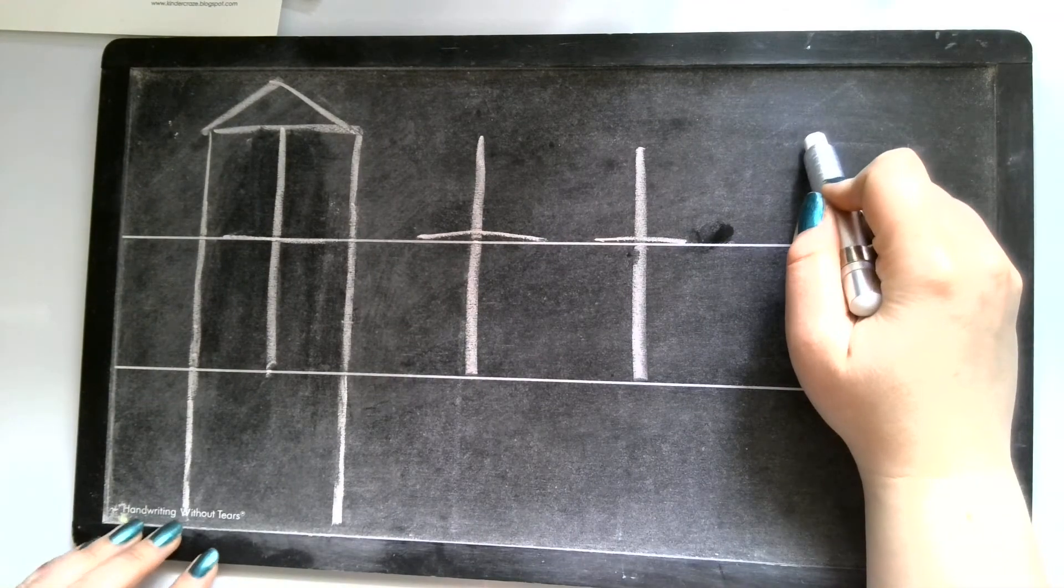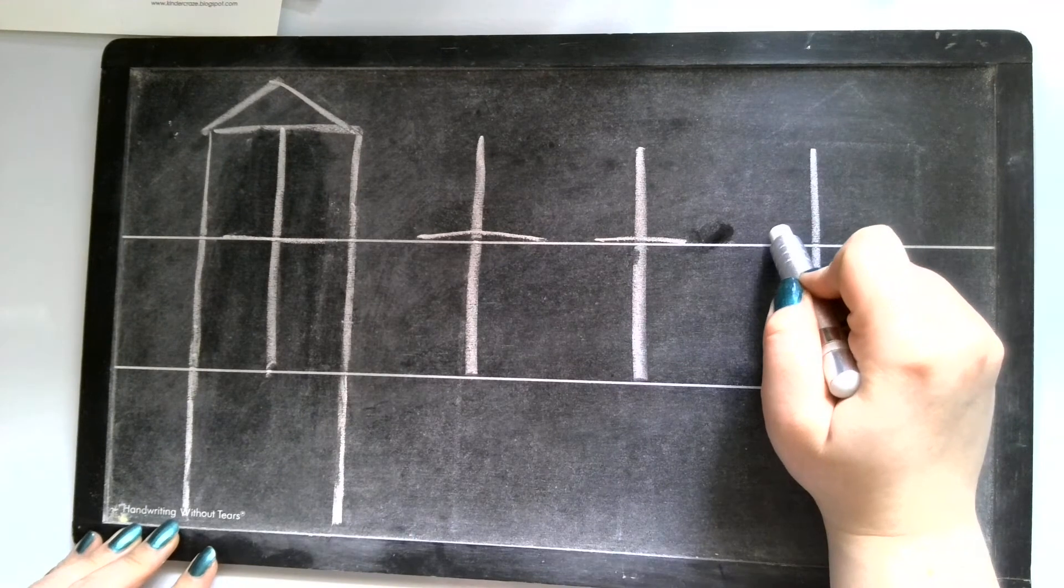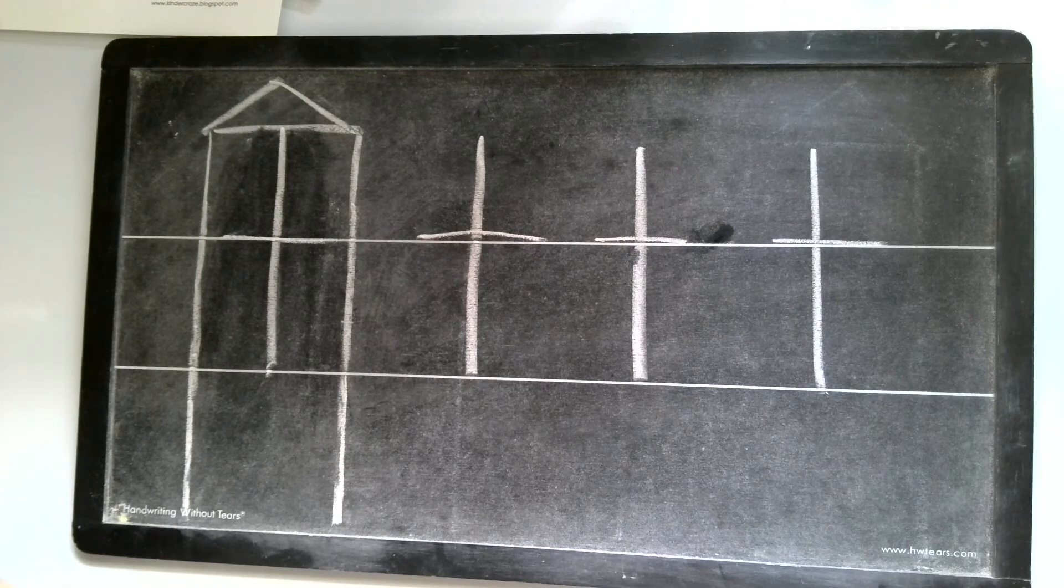One more time. We're going to start at the top. We're going to go straight down. We're going to jump to the middle line and go straight across. And this is our lowercase letter t.